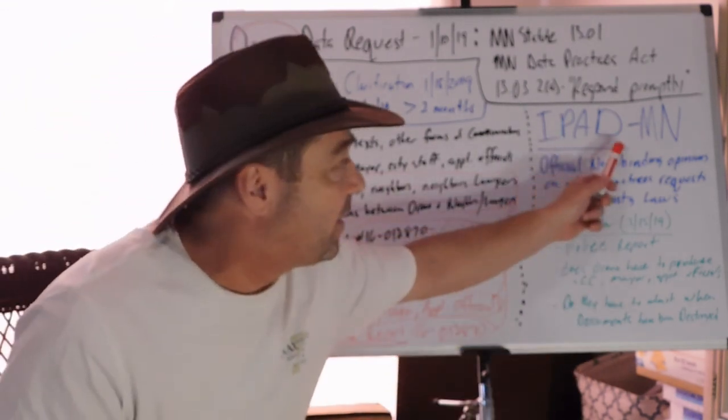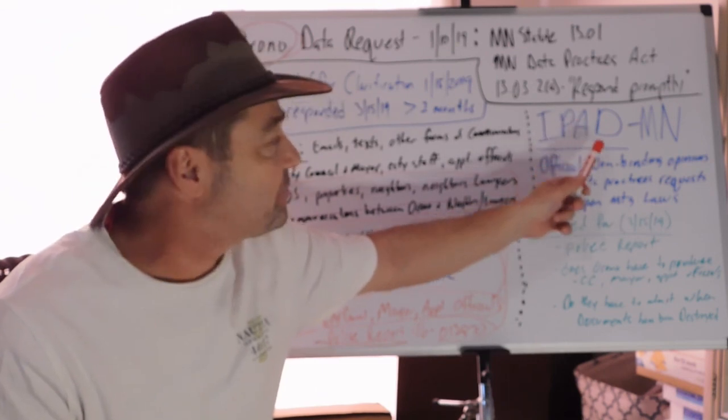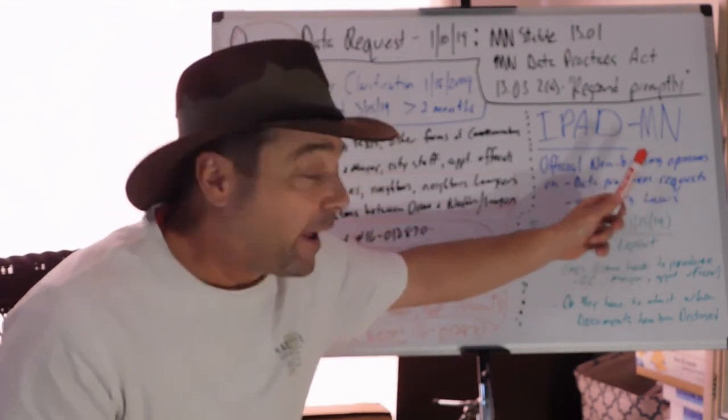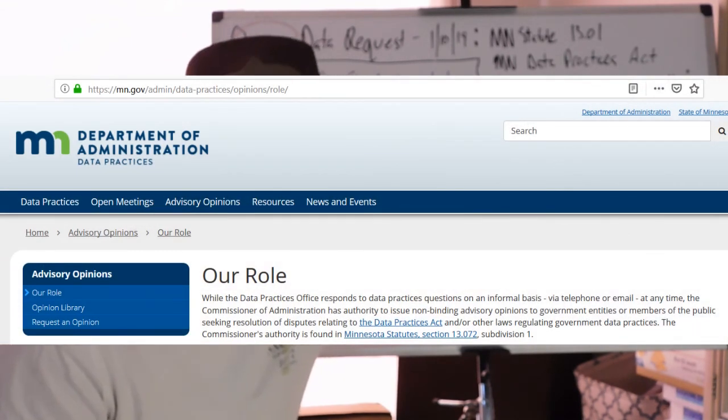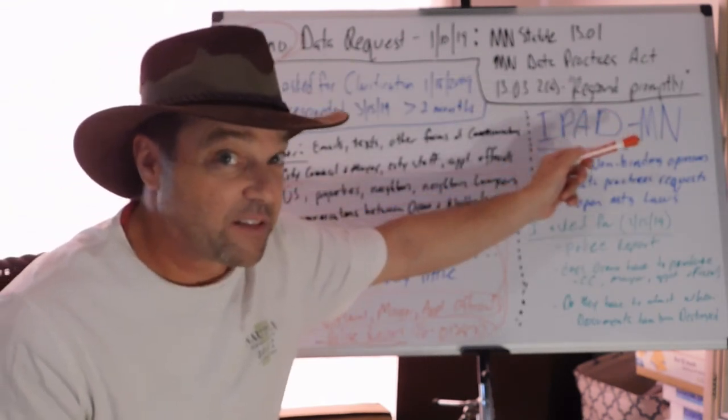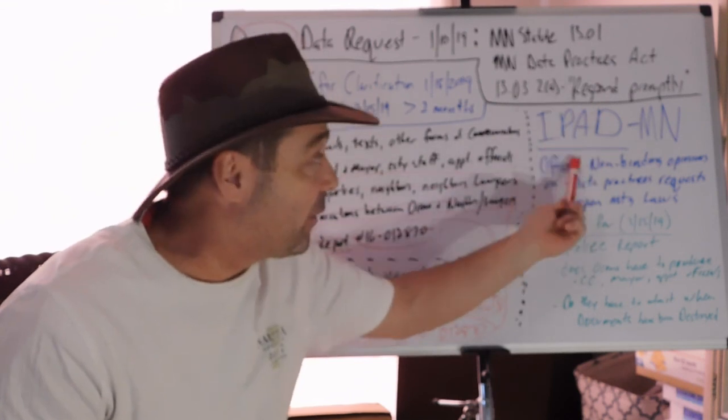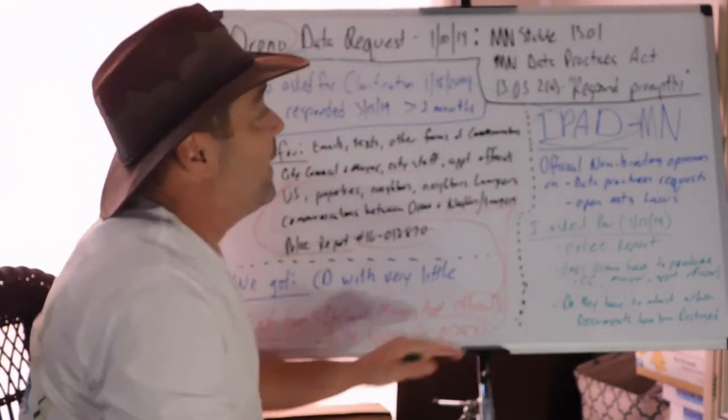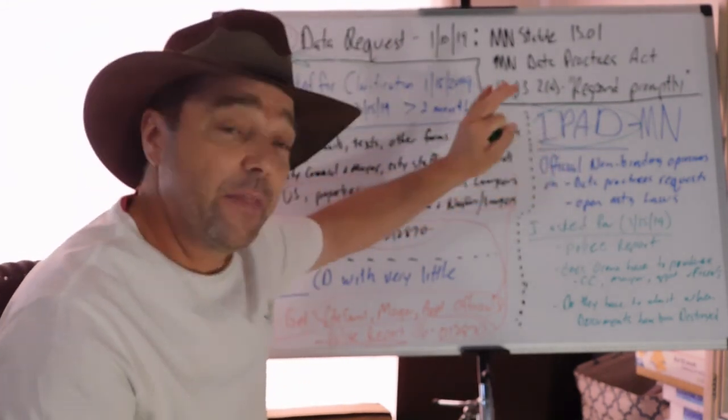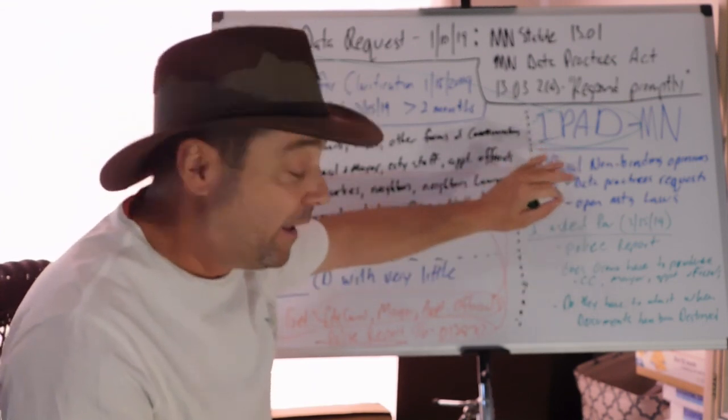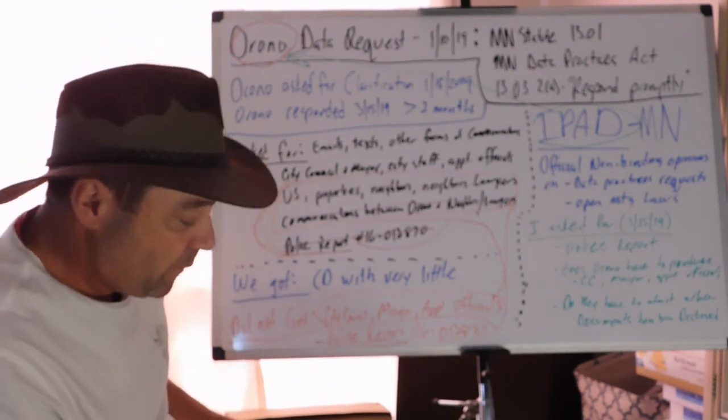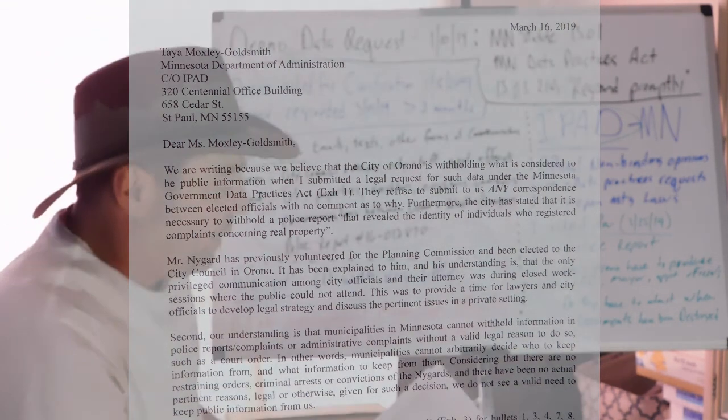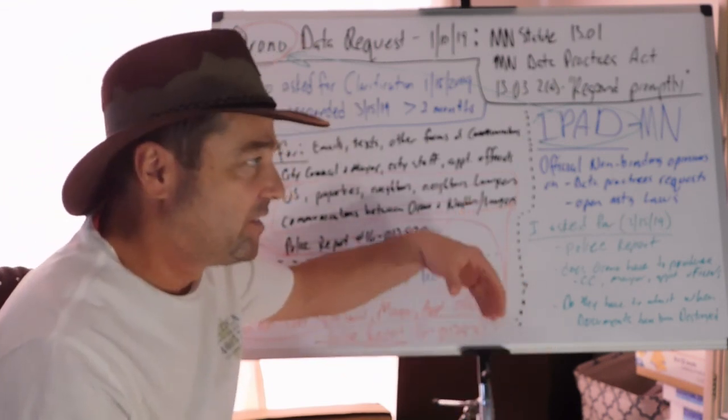We do have another option, and the option in Minnesota is called IPAD. I tried looking up what it means—I can't find that anywhere—but this is basically the office in charge of reviewing data practices requests and open meeting laws. What they do is they give official non-binding advisory opinions which tell the city, hey, you know what, you probably better give that stuff up because it's the law. How do I know this? Because I've done it before and I've gotten a letter before from IPAD telling Orono, hey you guys give it up, that's what the law says. I did this before and it works, so I'm doing it again. I sent a letter to IPAD to one of the directors and I outline what's going on here.